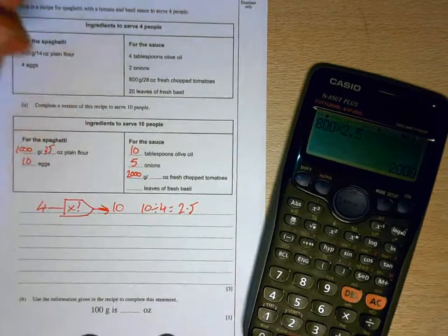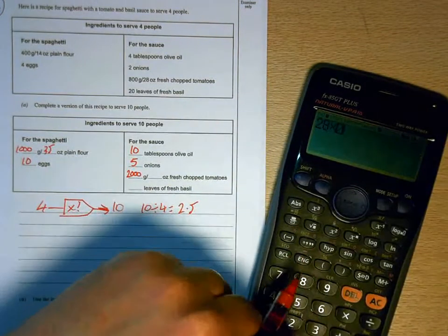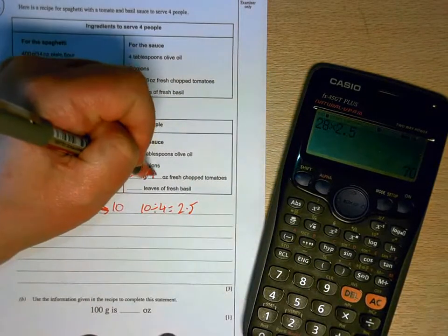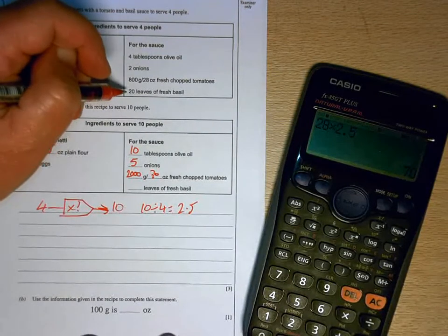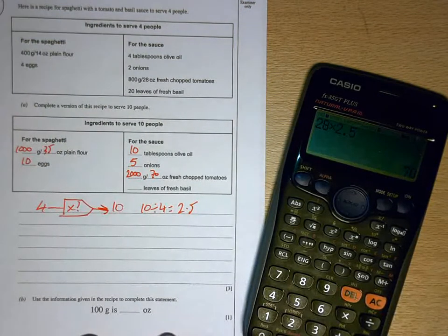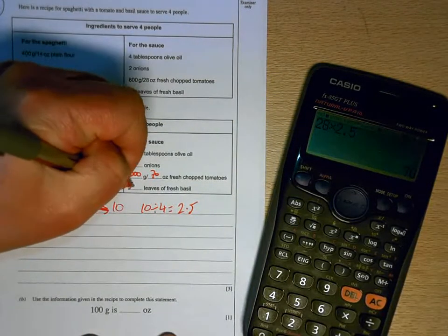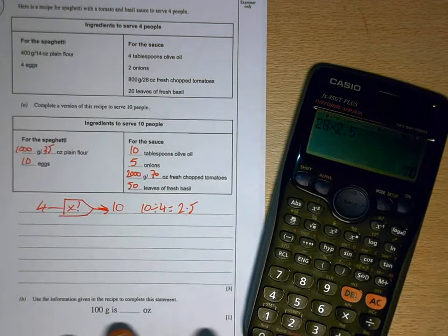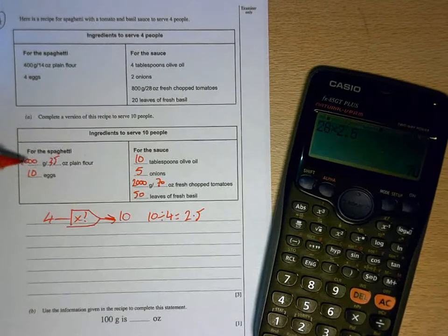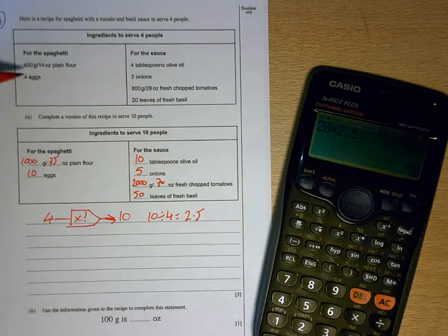28 ounces will be 28 times 2.5, 70 ounces. And 20 leaves of basil will be 20 lots of 2.5, which is 50 leaves of basil. So every one of those is a 2.5 times multiplier of the original ingredients.